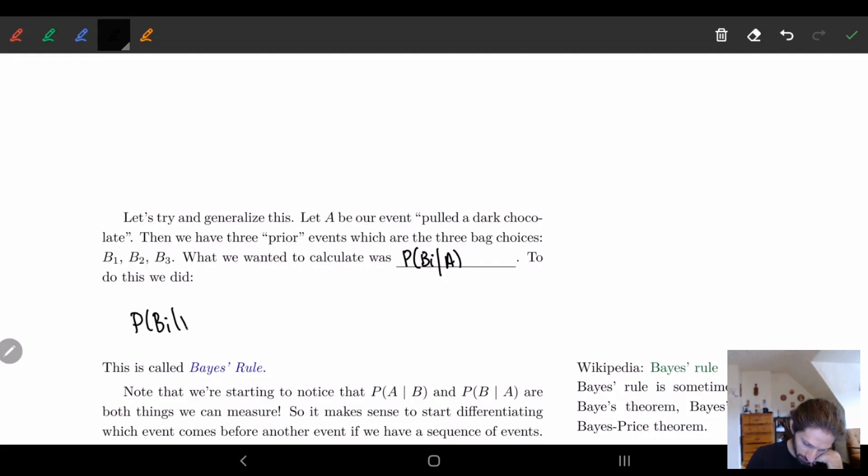What we did is I took this prior event and I said okay if I write it out I just get this. But on top we already know what this is. This is the after event given the prior event times the probability of the prior event divided by probability of A. This is known as Bayes rule.